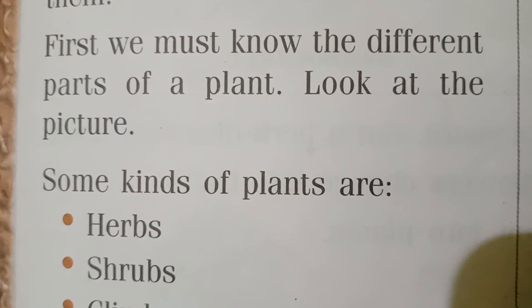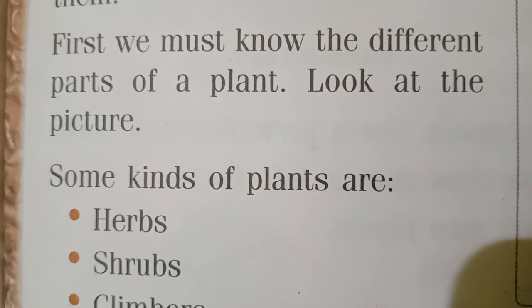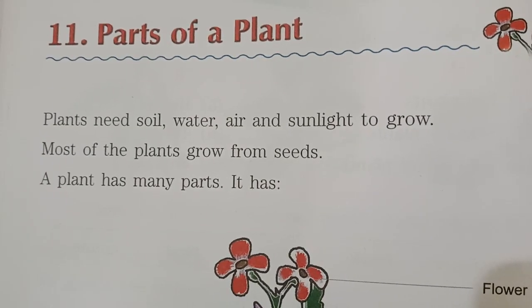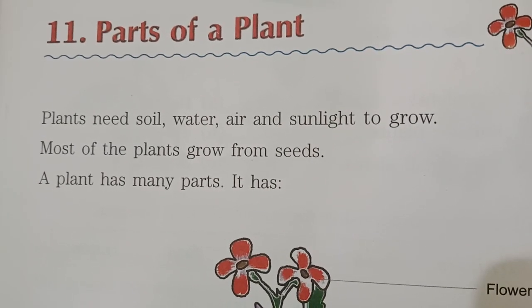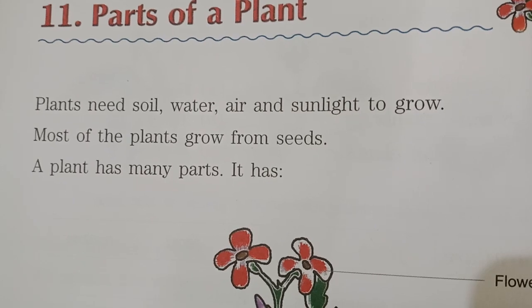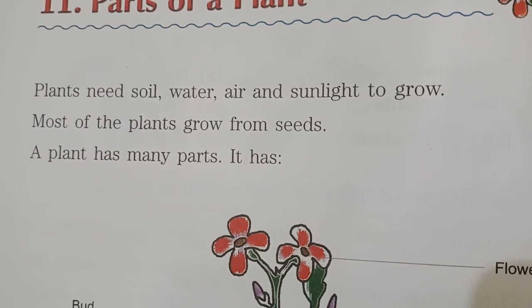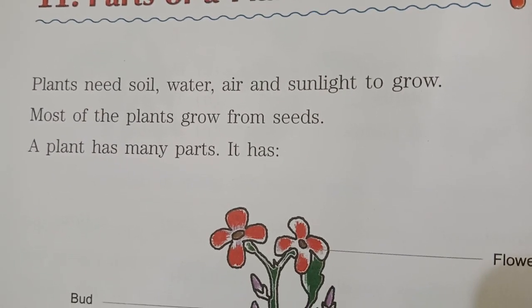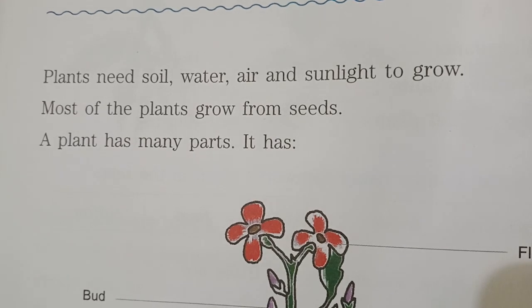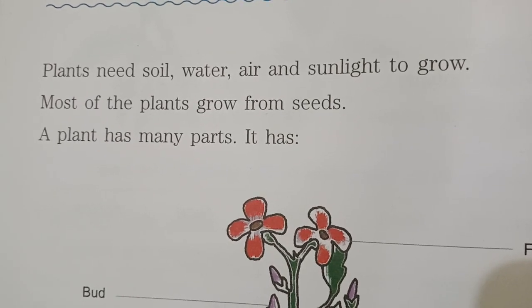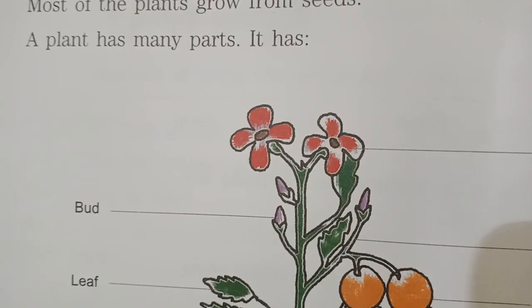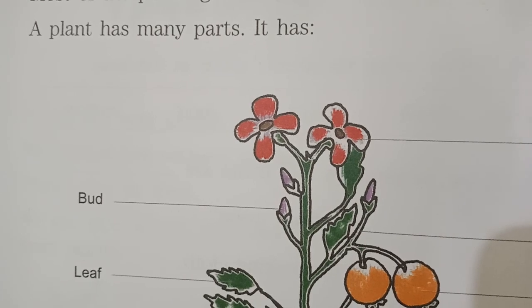First we must know the different parts of a plant. Plants need soil, water, air and sunlight to grow. Most of the plants grow from seeds. A plant has many parts.